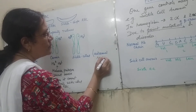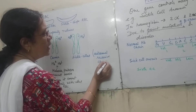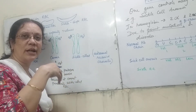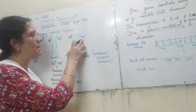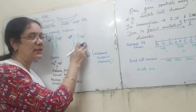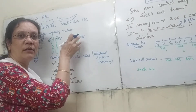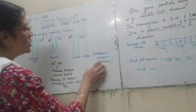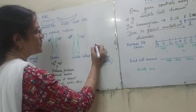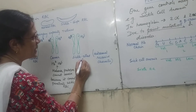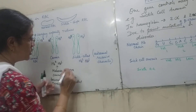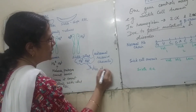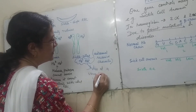For an autosomal recessive character to be expressed, both genes must have the same mutation. In this case the mutation is in the sixth amino acid. Recessive means it will be expressed only as HbS/HbS. These people do not survive — they die at a very young age.